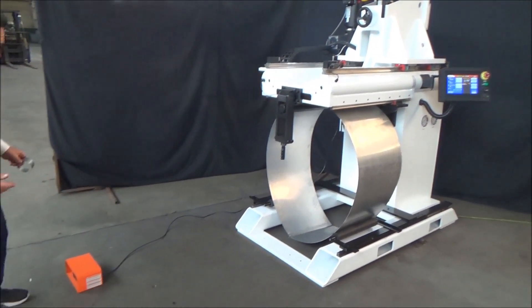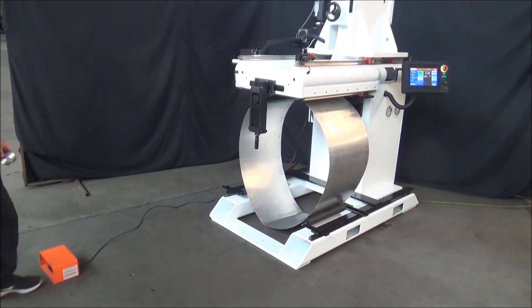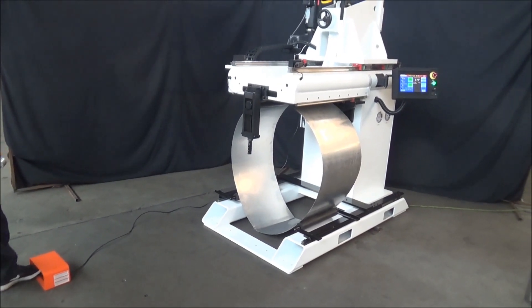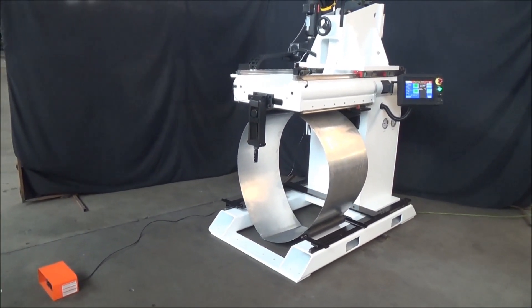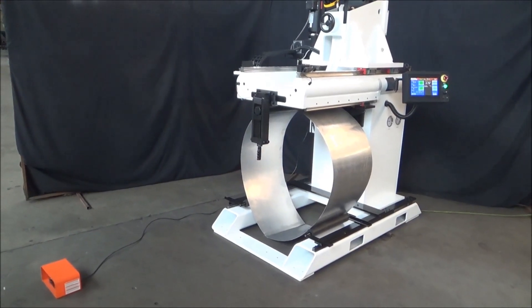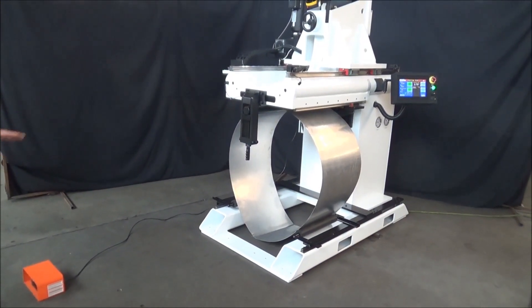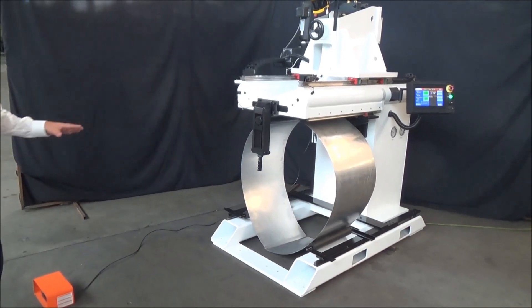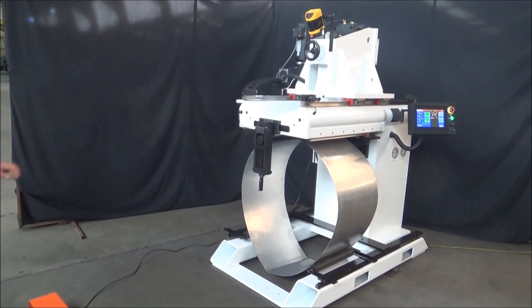You clamp with your right foot and cycle start with your left foot. It also has a safety light so that if the operator should activate the light it shuts it off.